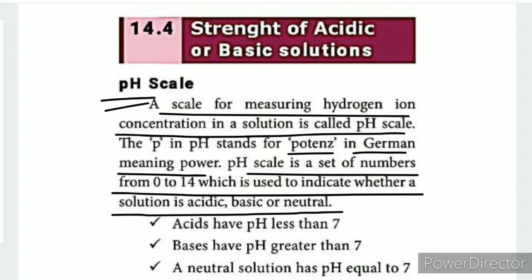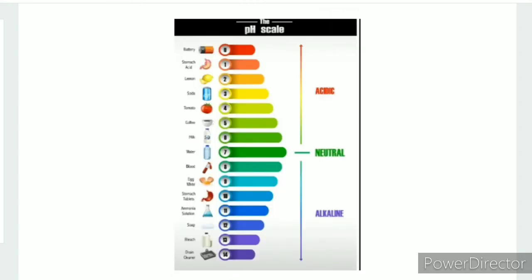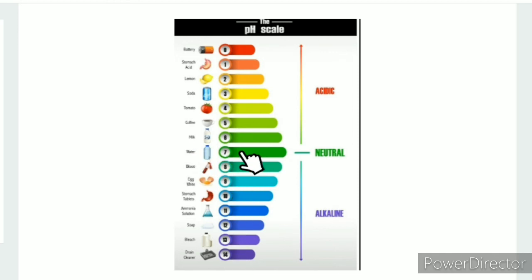Acids have a pH less than 7. Bases have a pH greater than 7. The neutral point is 7. On the scale, 0 to 14, with 7 as neutral, you can see that acid is on one side and base is on the other.